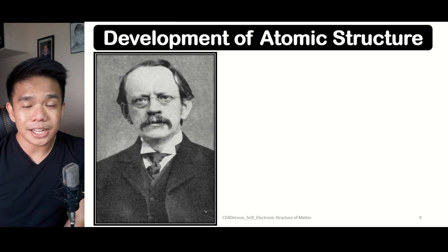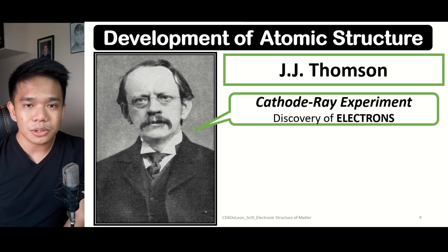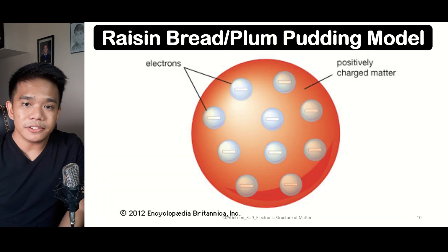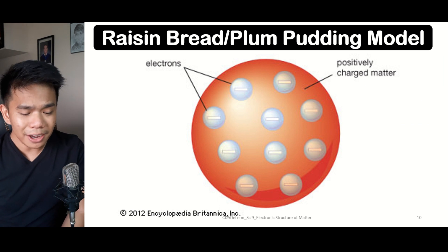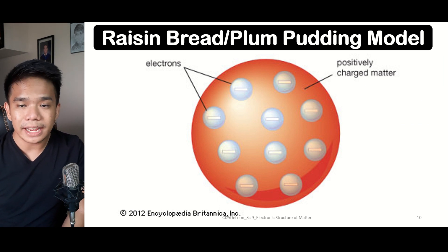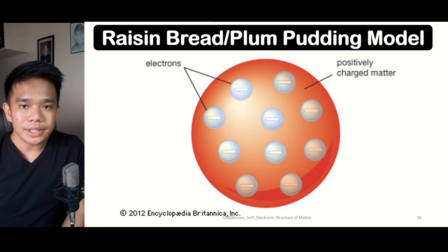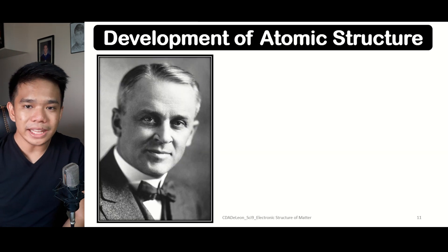Now let us look at the historical perspective of the discovery of atomic particles, starting with J.J. Thomson. J.J. Thomson performed the cathode ray experiment, which led to the discovery of the electron. Based on his findings, he found that electrons — the negatively charged particles — are embedded within a positively charged matter. The atomic model made by J.J. Thomson is similar to a raisin bread or plum pudding model.